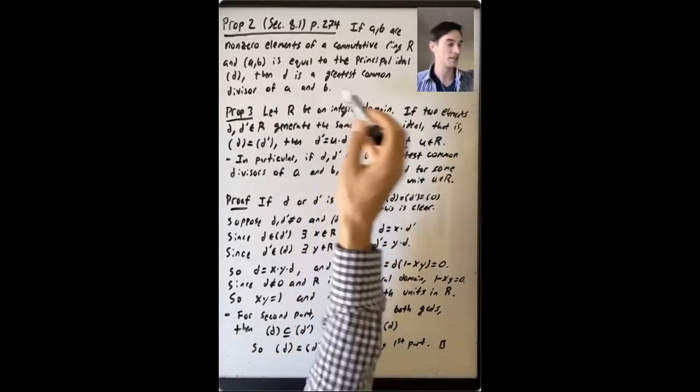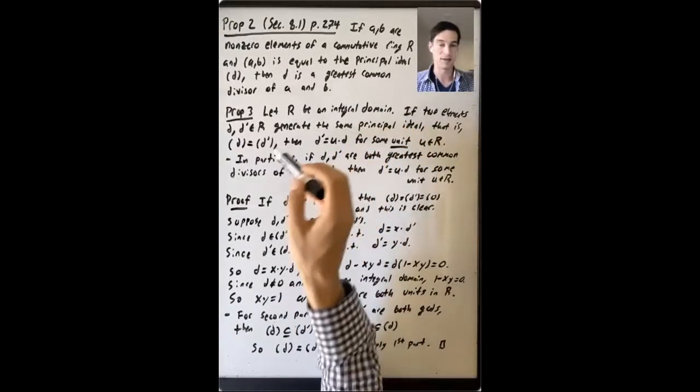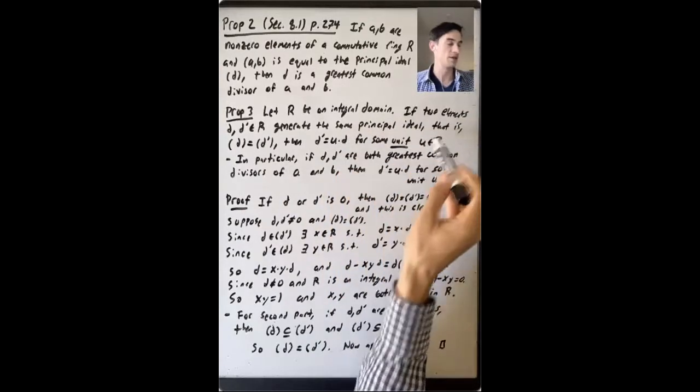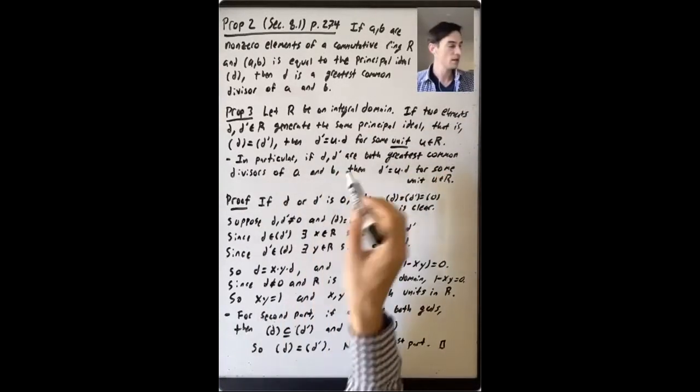So that proves the first part, that D' is equal to U times D for some unit U in the ring.